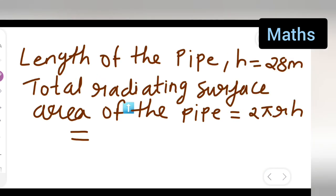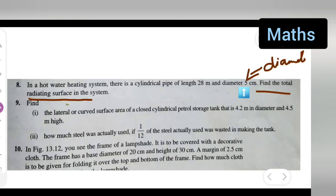The length of the pipe, which is the height, h = 28 meter. In the question you can see there is a cylindrical pipe whose length is 28 meter. This is the height.